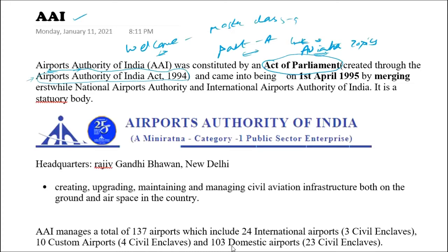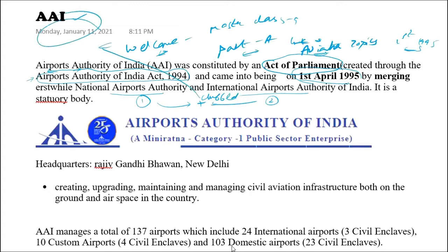Because of this Act, the Airports Authority came into being on 1st April 1995. It was established by merging two authorities: the National Airport Authority and the International Airport Authority of India. In 1995, these two were clubbed together and named AAI.